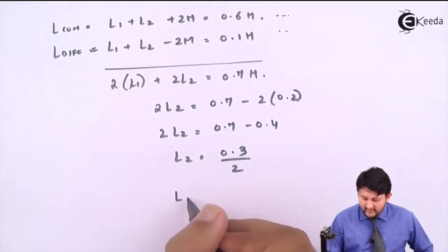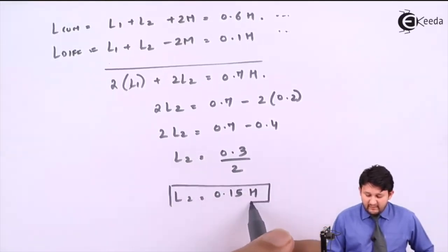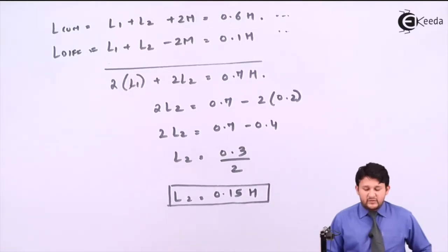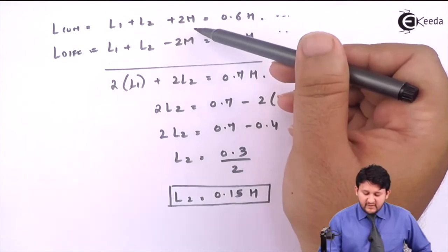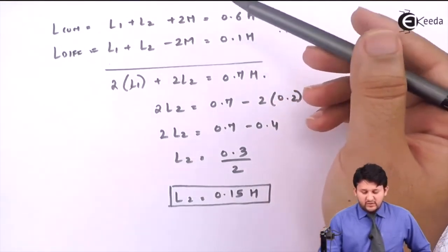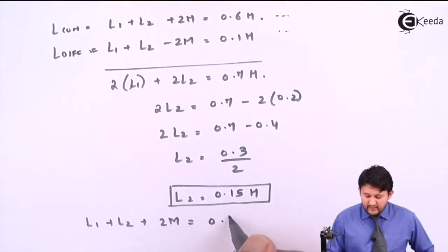So L2 will be 0.3 divided by 2, so the value which you will be getting is 0.15 for the value of L2. After getting the value of L1 and L2, let's find the mutual inductance. M can be found from either equation, that's your choice.